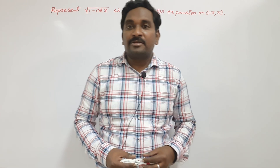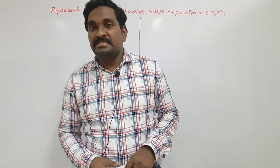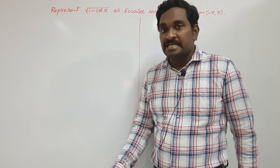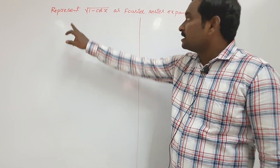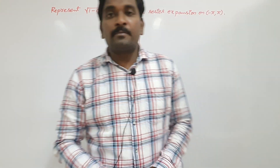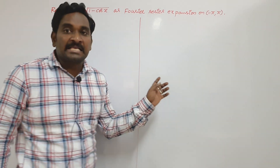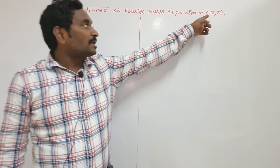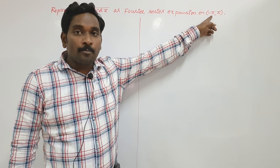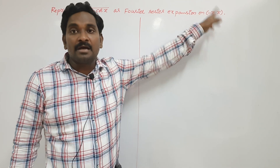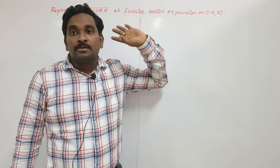Hi everyone, welcome back to our channel. This is another example on Fourier series. Represent root over 1 minus cos x as a Fourier series expansion on the interval, open interval minus pi comma plus pi.